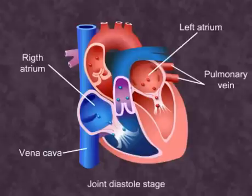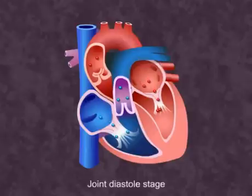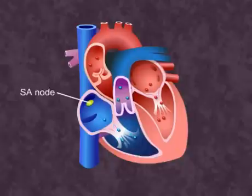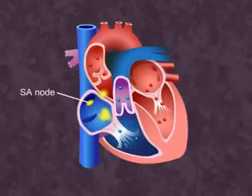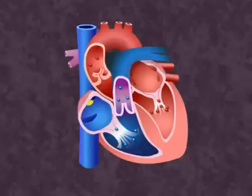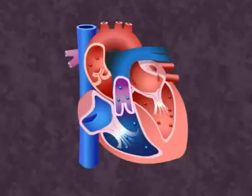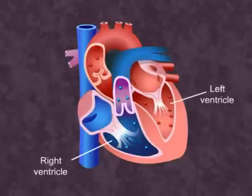Now, atrial systole is initiated when the SA node sends out an electric signal. During atrial systole, the atria undergo contraction which forcefully passes the blood into the ventricles through the tricuspid and bicuspid valves.